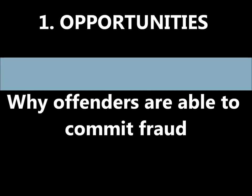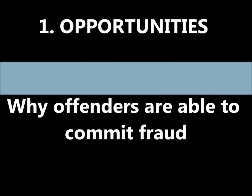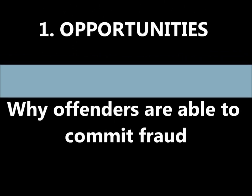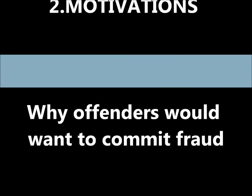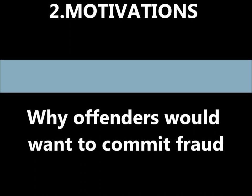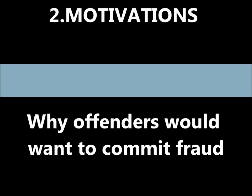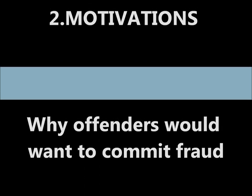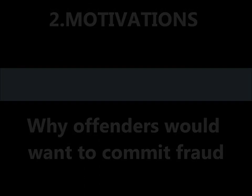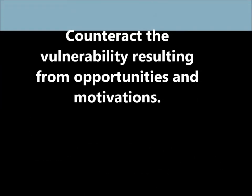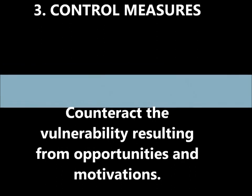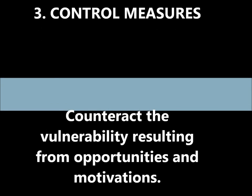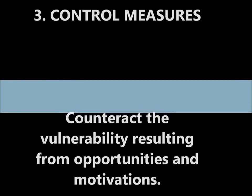The three aspects are: 1. Opportunities — why offenders are able to commit fraud; 2. Motivations — why offenders would want to commit fraud; and 3. Control measures — which counteract the vulnerability resulting from opportunities and motivations.